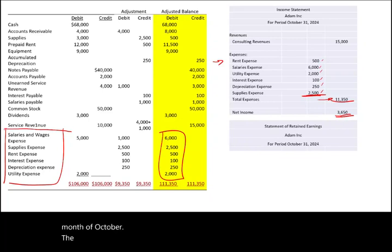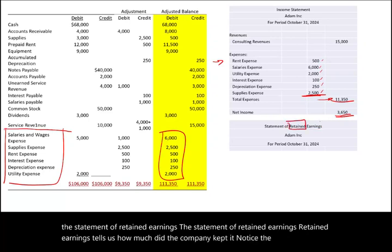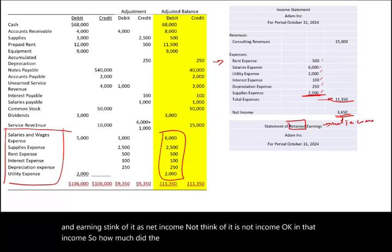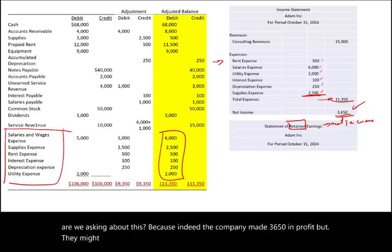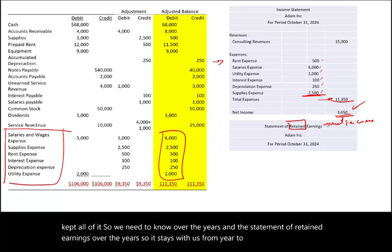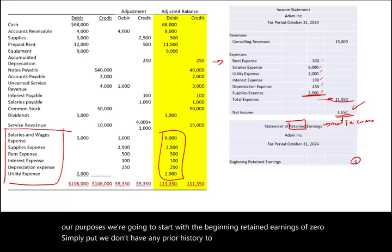The next financial statement is called the statement of retained earnings. The statement of retained earnings tells us how much the company kept. Think of retained earnings as net income — it is net income. The question is: did the company distribute all of it to shareholders, or did they keep all of it? The statement of retained earnings tracks this from year to year. For our purposes, we start with beginning retained earnings of zero, since we don't have any prior history for this company.